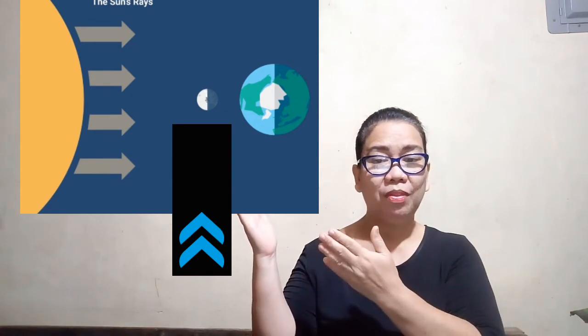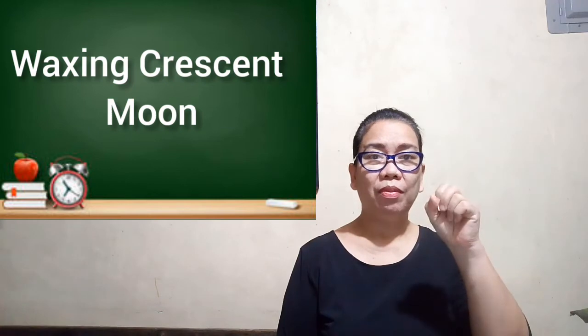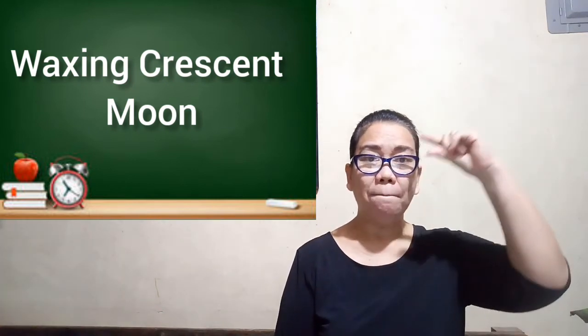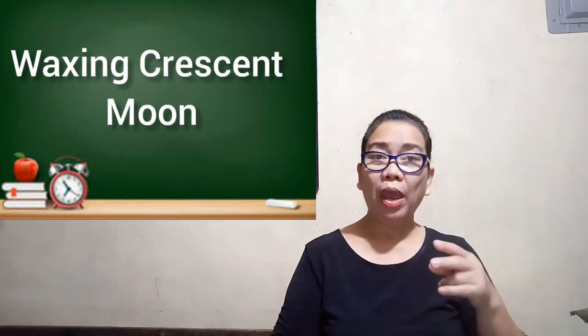Number two is the waxing crescent moon. It is when the moon looks like a crescent and the crescent increases in size from one day to the next.